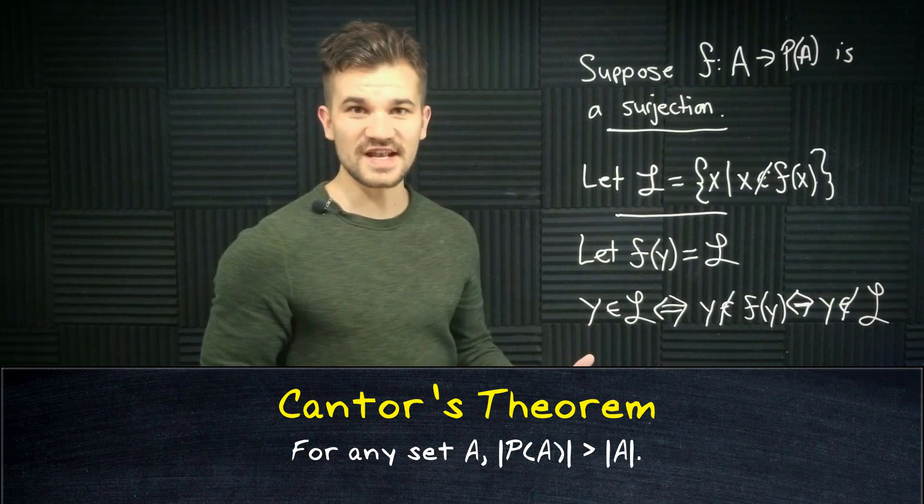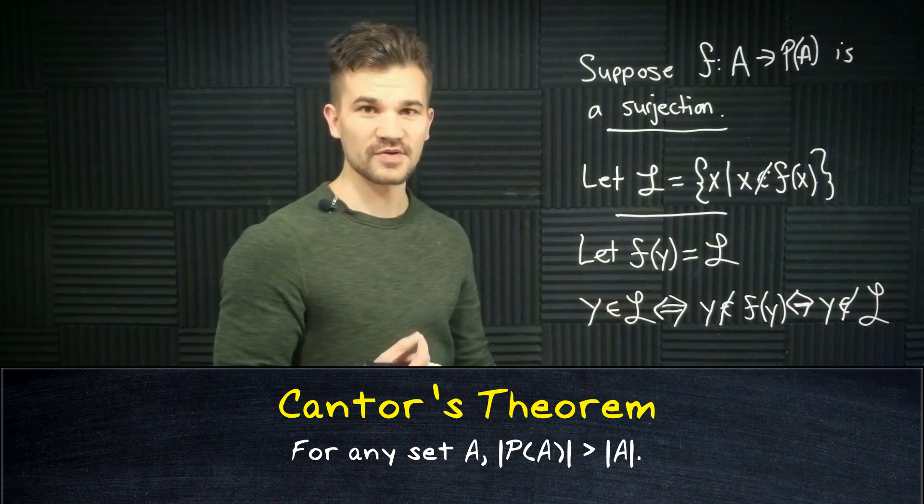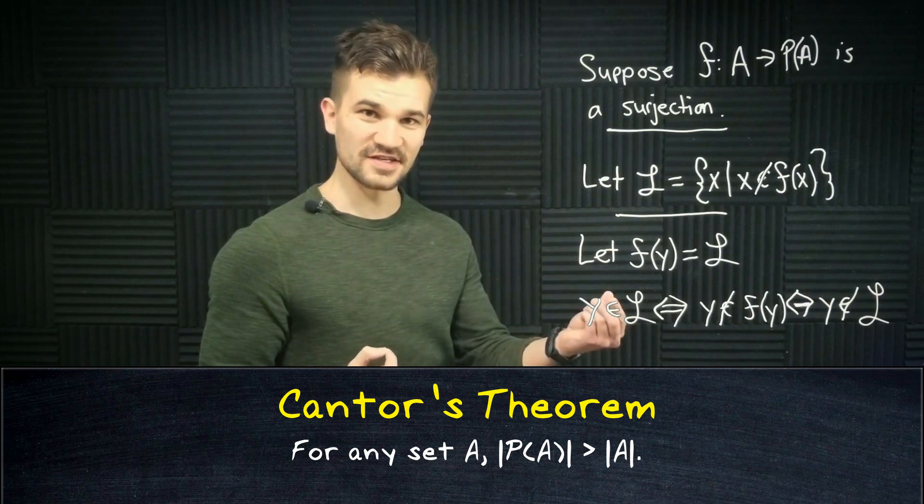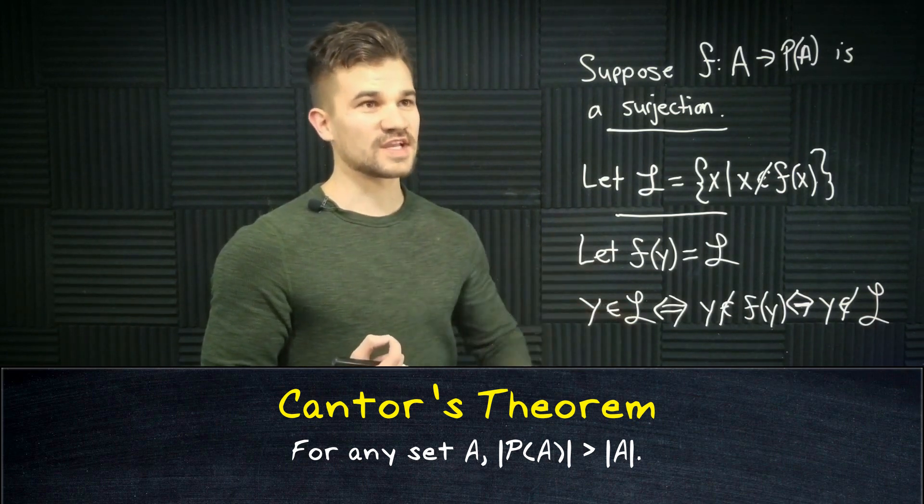On the other hand it's pretty obvious that A has a smaller cardinality than the power set. We just take the injection of sending each element to the singleton set of that element. That proves Cantor's theorem.